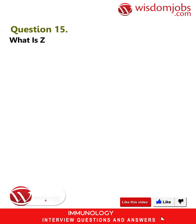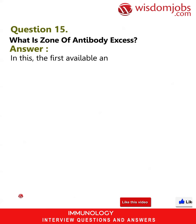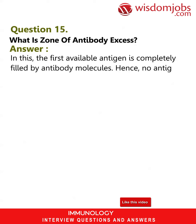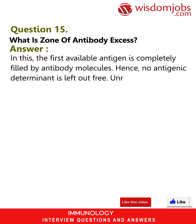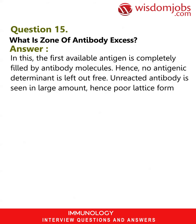Question 15: What is the zone of antibody excess? Answer: In this zone, the first available antigen is completely filled by antibody molecules, hence no antigenic determinant is left free. Unreacted antibody is seen in large amounts, hence poor lattice formation occurs.